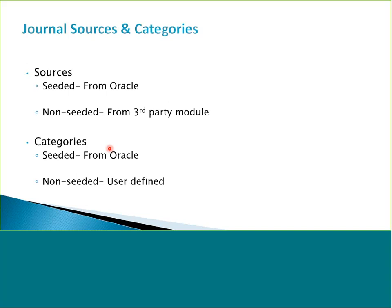This is the same for categories, but seeded and non-seeded might mean something a bit different. Seeded categories are the ones that come with Oracle. Non-seeded are usually user-defined — maybe the categories that come with Oracle don't sufficiently describe the purpose of a group of journals you're going to enter, so you can create your own category and Oracle lets you do that.